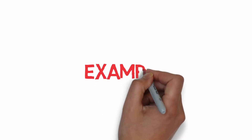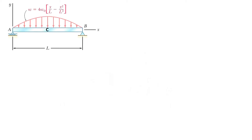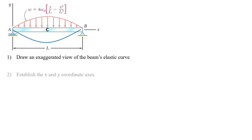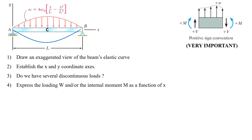Now we look at an example. For the beam and loading shown, we are going to determine the equation of the elastic curve, the slope at end A, and the deflection at the midpoint of the span. The first step is to draw an exaggerated view of the beam's elastic curve. In the second step, we establish the x and y-coordinate axes to find M(x) or w(x) functions. In this example, the w(x) function is provided. Because we have a downward load distribution, the w(x) function has a negative sign.